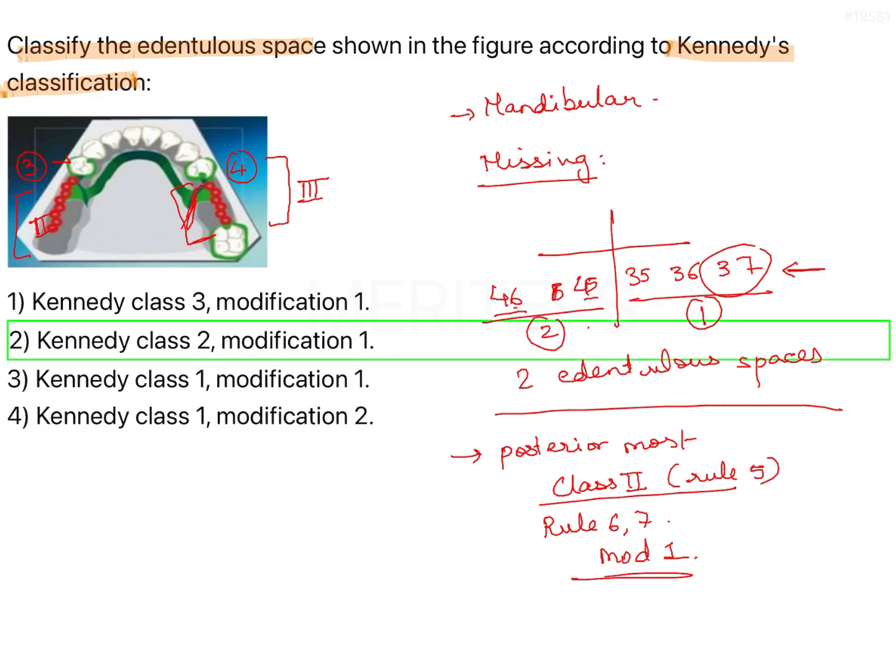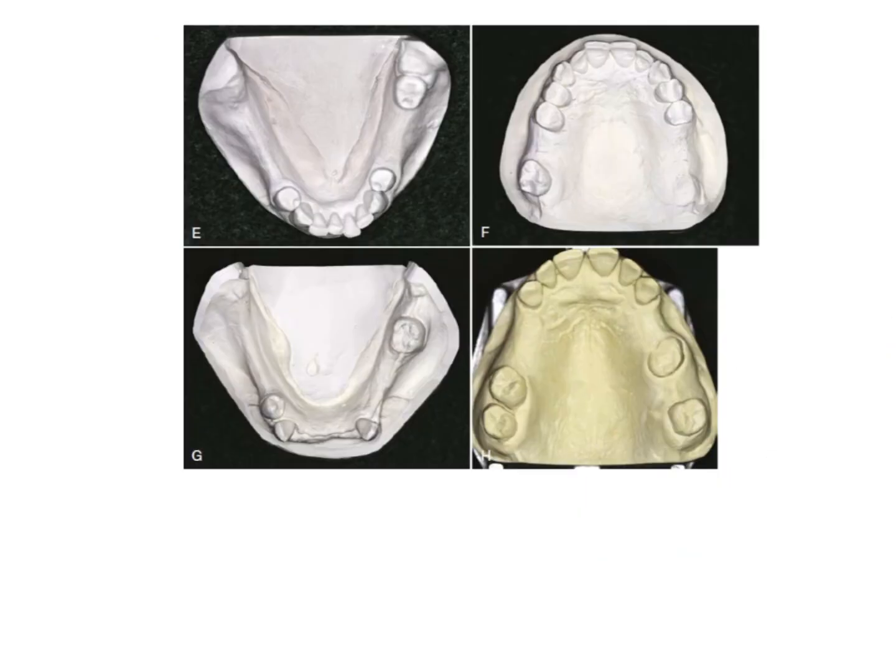So the correct answer is class 2, modification 1. Similar question here, this is again class 2, modification 1. I hope you are understanding if this is unilateral and posterior most, this is an additional space, so it is a modification space. So this is class 2, modification 1.